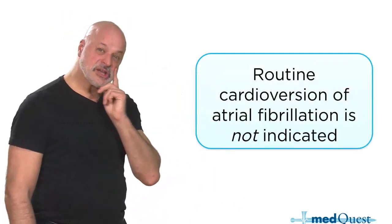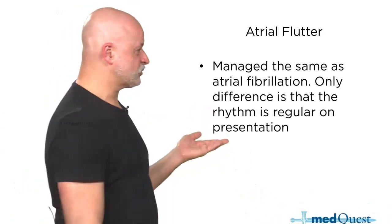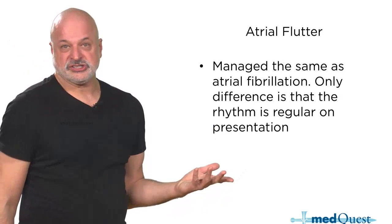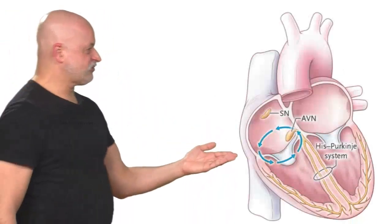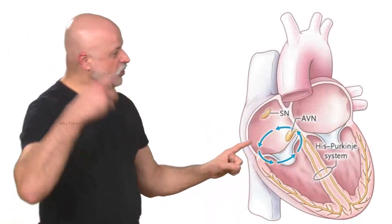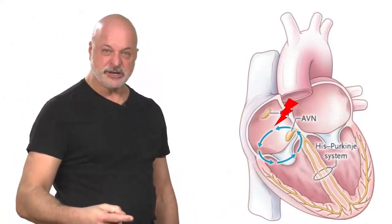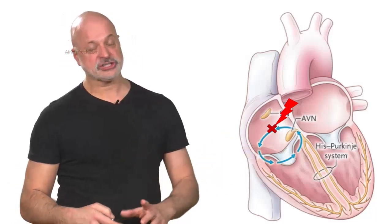Routine cardioversion is not indicated because patients convert back into AFib. How do you manage atrial flutter differently than atrial fibrillation? You don't — it's managed essentially the same. If you have it for more than two days and a CHADS-VASC of two or more, you anticoagulate. The main difference is the EKG pattern.